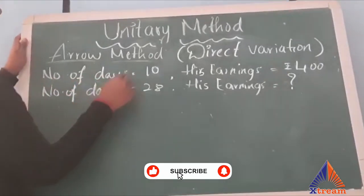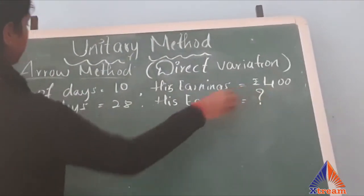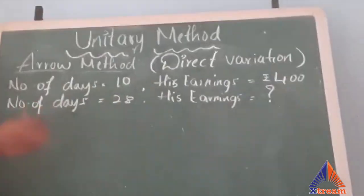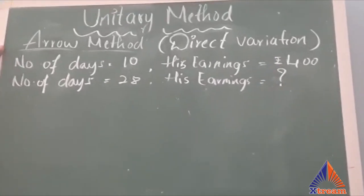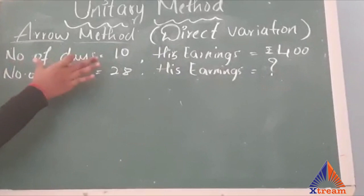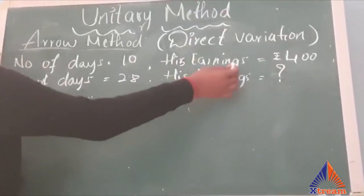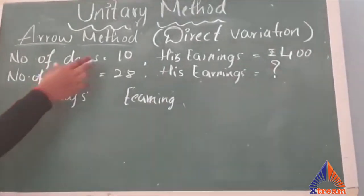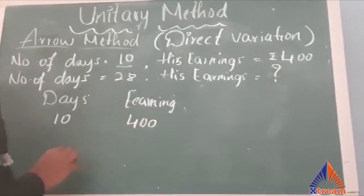Let's solve a question of direct variation in arrow method. A man earns 400 rupees in 10 days — what will be his earnings in 28 days? In arrow method, first we form two columns. In the first column we write the first quantity, which is number of days, and in the second column we write earnings. So for 10 days his earnings are 400 rupees.